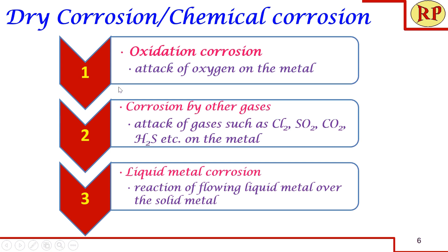There are three types of dry corrosion. One is oxidation corrosion — it is the direct attack of oxygen on the metal. Because most metals undergo this, we have categorized it separately. Next, any gas other than oxygen that attacks the metal is called corrosion by other gases, such as chlorine, sulfur dioxide, carbon dioxide, H2S, etc. Then there is liquid metal corrosion — for example, a molten liquid flowing inside a metal pipeline with turbulent action can cause corrosion over the solid metal. In this session we are going to see only oxidation corrosion.